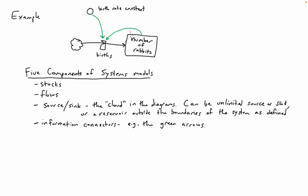These connectors can also carry information about feedback. For example, the more rabbits there are, the more births we expect — so we could put a little positive sign on that connector to indicate there's a positive feedback involved.